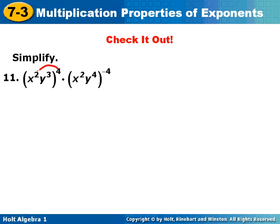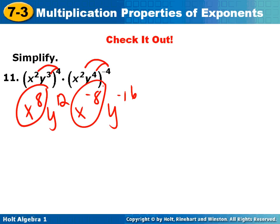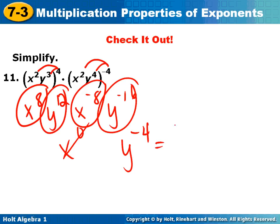I have to put everything to the 4th power, so that's x to the 8, y to the 12th. And then I've got to put everything to the negative 4 power, so that's x to the negative 8, y to the negative 16. Now I have to combine, and if you look at those, those are going to cancel, x to the 0, which is 1. The y to the 12th and the y to the negative 16th adds up to y to the negative 4, so the final answer is 1 over y to the 4th.